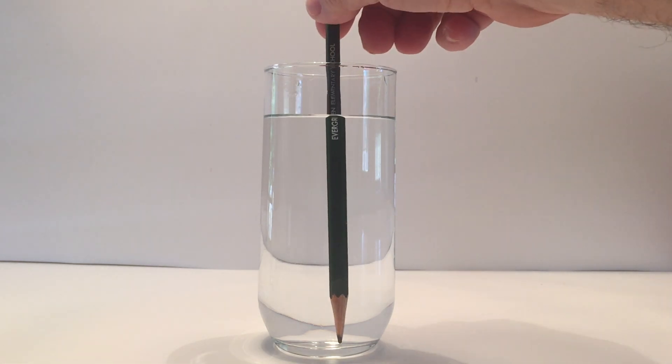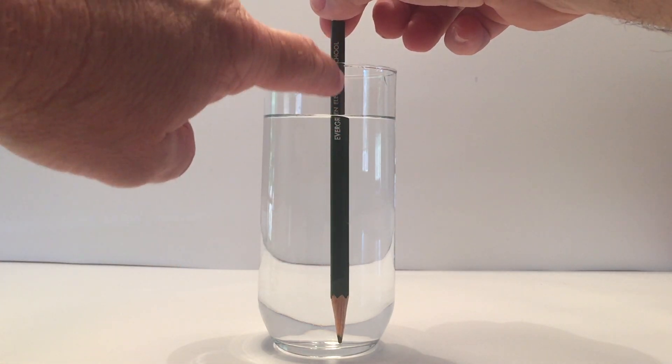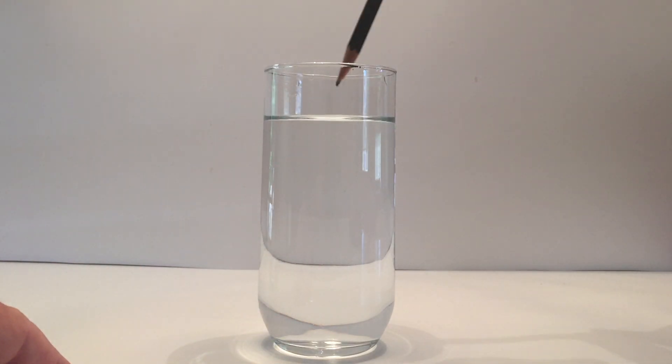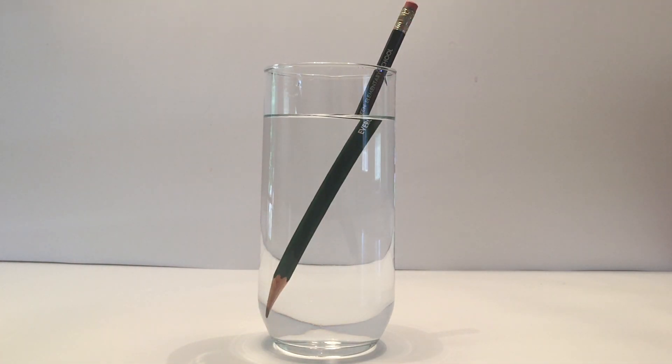Then I place a pencil directly in the water. You can see nothing's really happening there. But when I put it diagonal with the three-quarter full glass, it looks like it's mangled or broken.